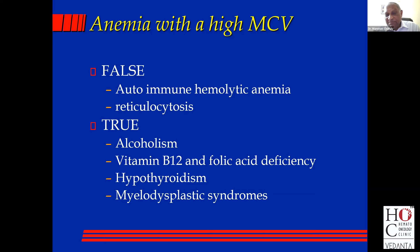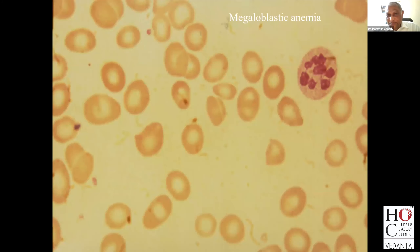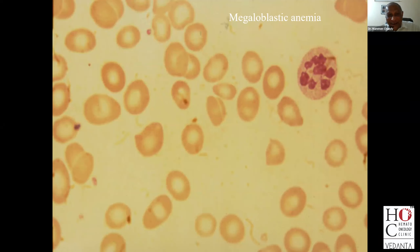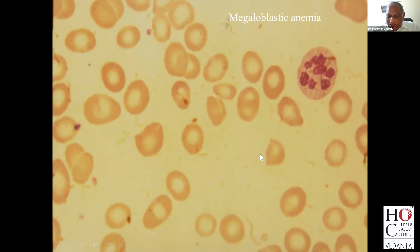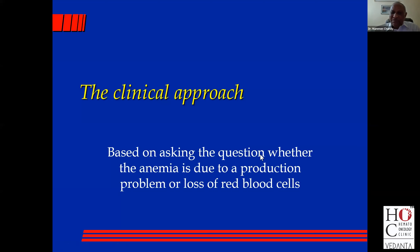In an elderly person with an MCV of 100–104, you must keep in mind a myelodysplastic syndrome. This is the peripheral smear in a megaloblastic anemia and you can see the beautiful hypersegmented neutrophil — 1, 2, 3, 4, 5, 6, 7, 8 lobes. This used to be called the Arneth count, and this is a megaloblastic anemia. In B12 and folate deficiency, the megaloblasts are oval in shape. This is a classic megaloblastic anemia.